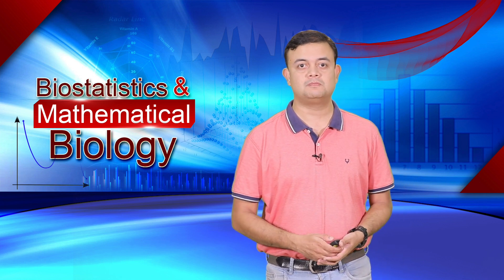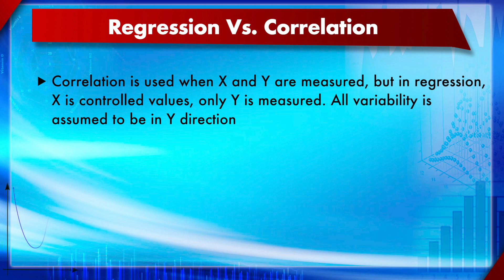What is the difference between regression and correlation? Correlation is used when both X and Y are measured. In regression, X values are controlled as part of the experimental design — only Y is measured. This means all variability is in the Y direction, not in X, because X is not random but decided as a controlled variable.